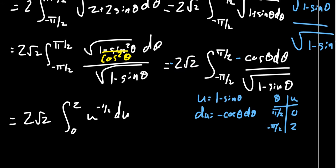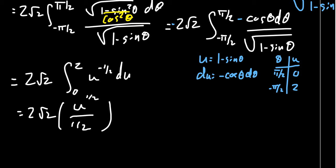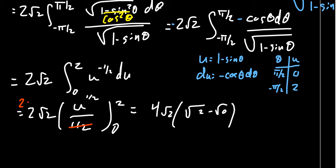By the power rule, the power goes up by 1 to give u to the one half, and we divide by one half — which is the same as multiplying by 2. Evaluating from 0 to 2, we get 2 times 2 equals 4, times 4 root 2, times the square root of 2 minus the square root of 0. In the end, we get 8.